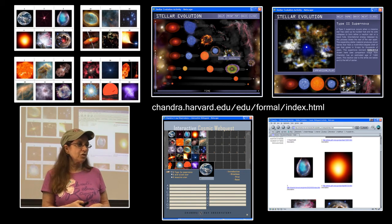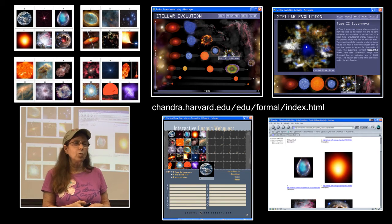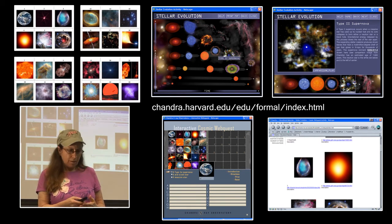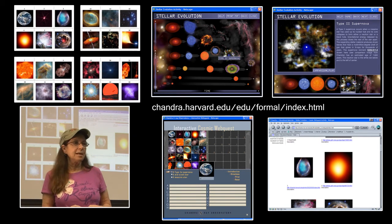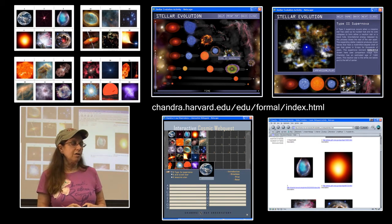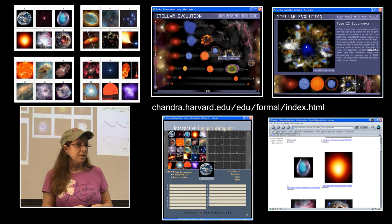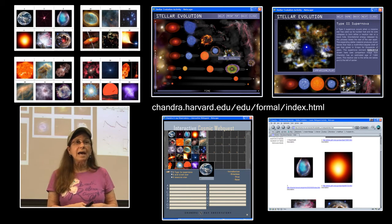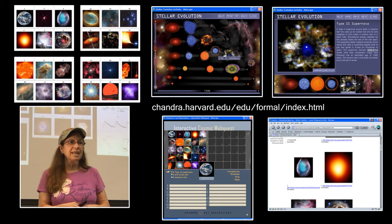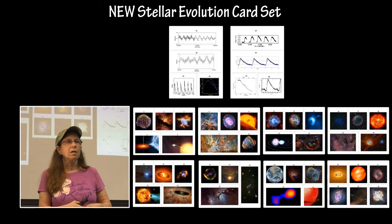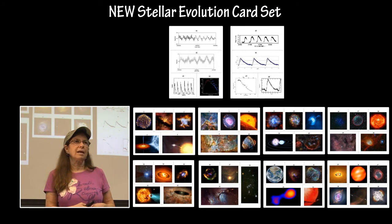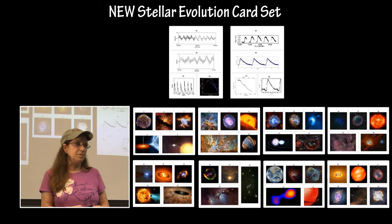It also shows you where in the evolutionary sequence that particular object is. There are flash versions, card sets you can request, and web quests. There is a plethora of stellar evolution materials on the Chandra website.